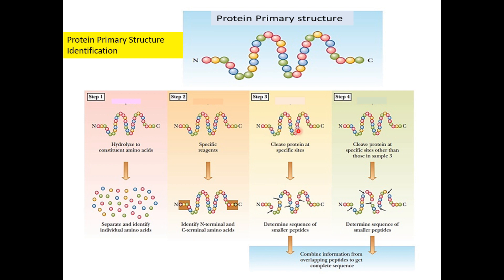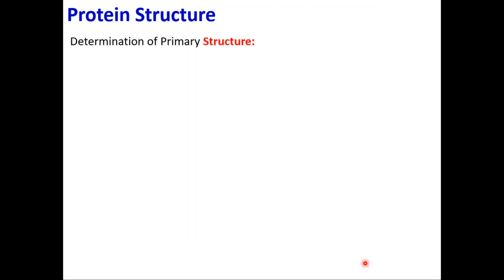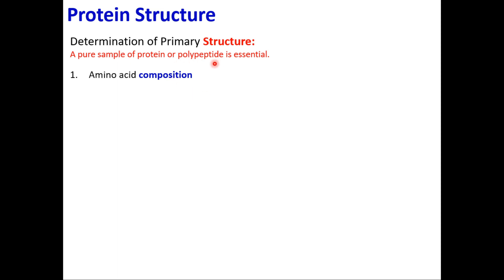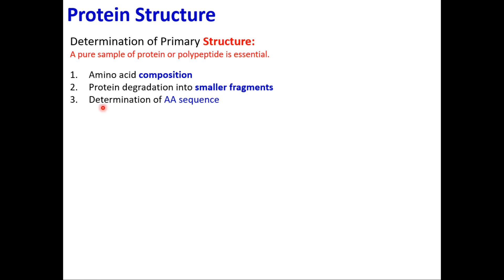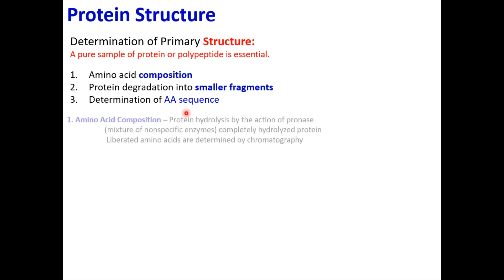Another approach is to cut the protein at different positions to form smaller peptides. Cutting at different places gives overlapping sequences, and from these overlapping sequences the protein primary structure can be identified. The steps for determination of protein structure are: (1) pure polypeptide sample required; (2) determine amino acid composition; (3) protein degradation into smaller fragments; (4) determination of amino acid sequence.